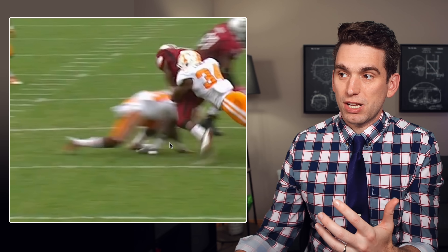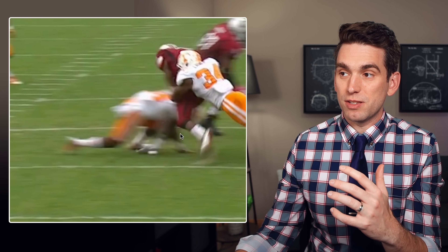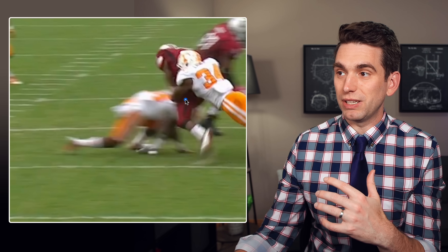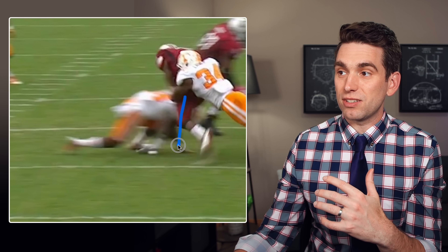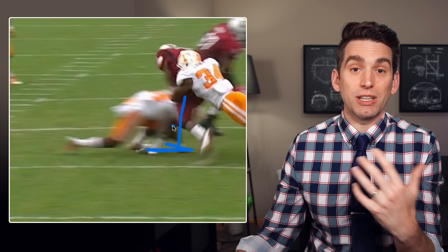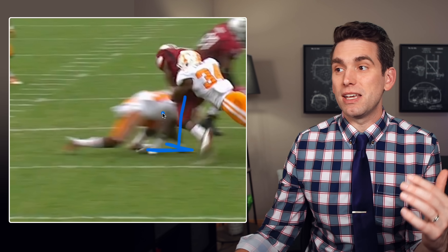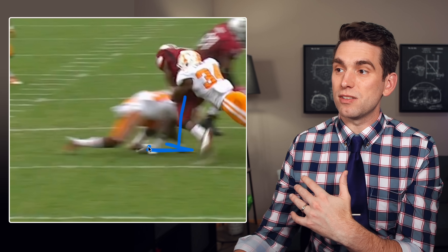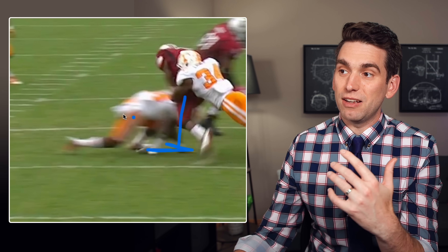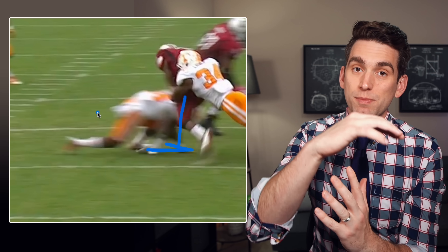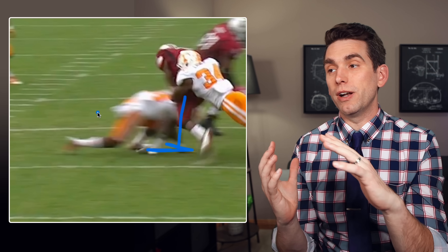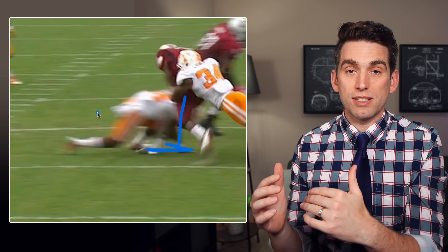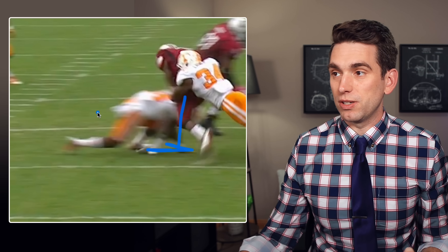If this play were such that it was maybe a step sooner and Lattimore's leg was more planted basically directly underneath of him, then what likely would have happened is his foot just would have been knocked backwards. But because his leg is planted in front of his body and his momentum's carrying him forward, it just hits the forces at the right time to cause the knee to hyperextend.